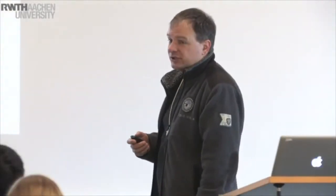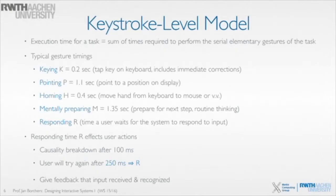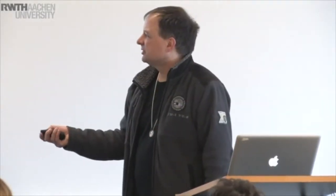Finally, if your system is slow — say you type your username and it takes three seconds before you can continue entering your password — that would be response time R, where you wait for the system to respond to input. We already know from Bloch's law that causality breaks down after about 100 milliseconds. After a quarter of a second without reaction, a user might try pressing the key again. Hopefully in a well-designed system you don't need R much, but it may come up.